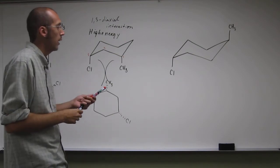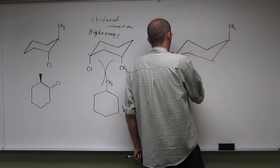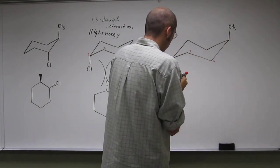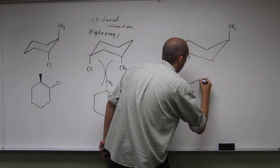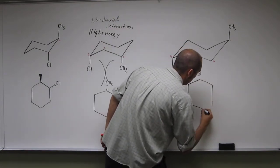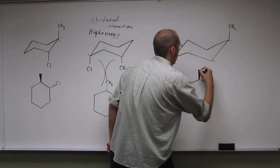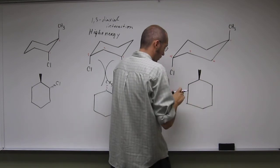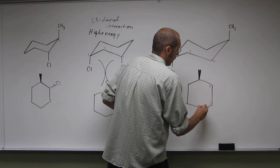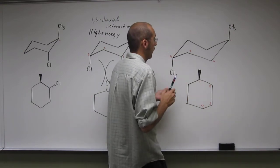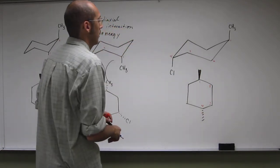Here we have the two substituents in the 1,4 position, so let's see what they look like when we draw them in the skeletal form. So we've got this one going up, so 1,2,3,4 like that and this one going down, so they don't even see each other.